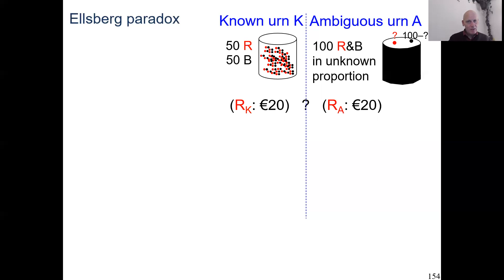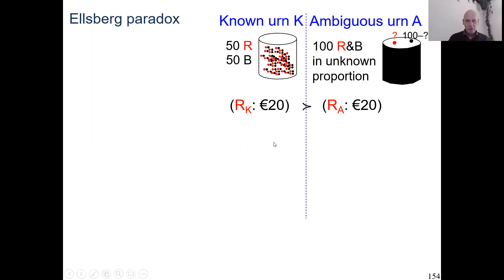With that understood, here is the question. The first gamble: if the ball drawn from the known urn is red, you get 20 euro, otherwise you get nothing. The second gamble: if the ball drawn from the ambiguous urn gives color red, you get 20 euro, otherwise you get nothing. Which of these two gambles would you prefer? Most people prefer to gamble on the known urn rather than the unknown urn. With the known urn, they have probability 0.5 of gaining the prize. With the ambiguous urn, the composition is unknown, so you don't know the probability of gaining the prize. People rather have a known probability than an unknown probability. This is the prevailing empirical finding.